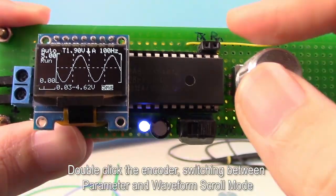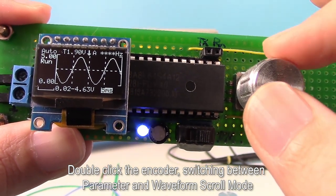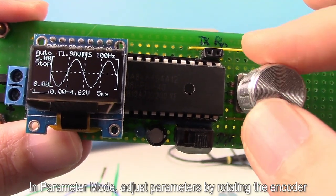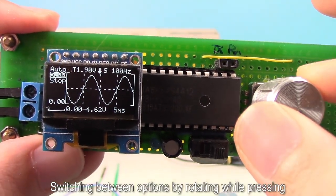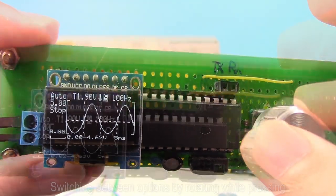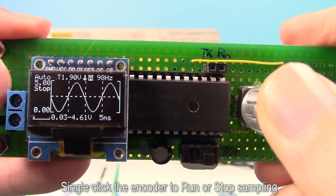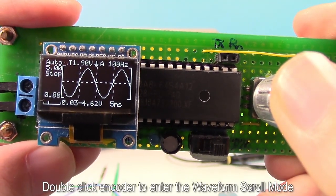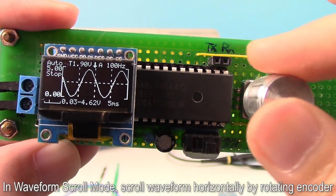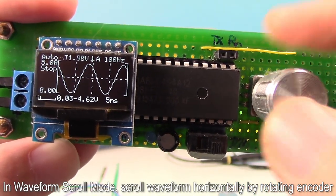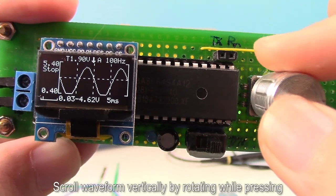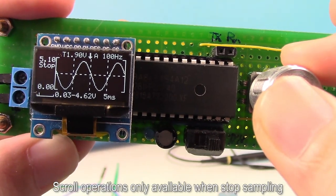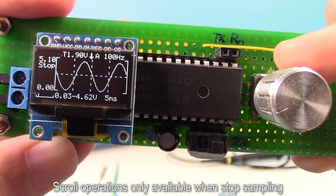Double click the encoder, switching between parameter and waveform scroll mode. In parameter mode, adjust the parameters by rotating the encoder. Switch between options by rotating while pressing. Single click the encoder to run stop sampling. Double click the encoder to enter the waveform scroll mode. In waveform scroll mode, scroll waveform horizontally by rotating encoder. Scroll waveform vertically by rotating while pressing. Scroll operations only available when stop sampling.